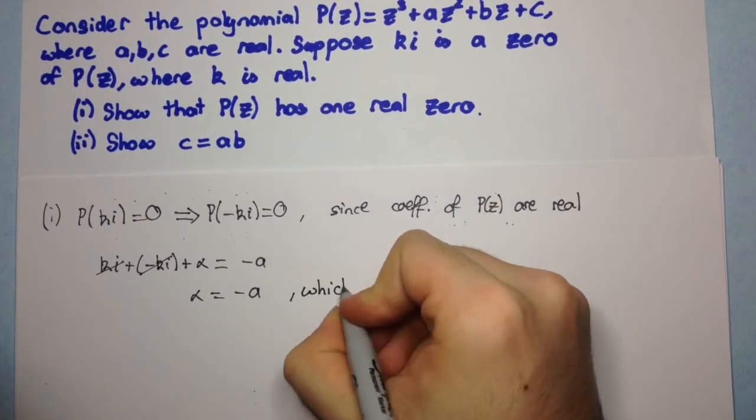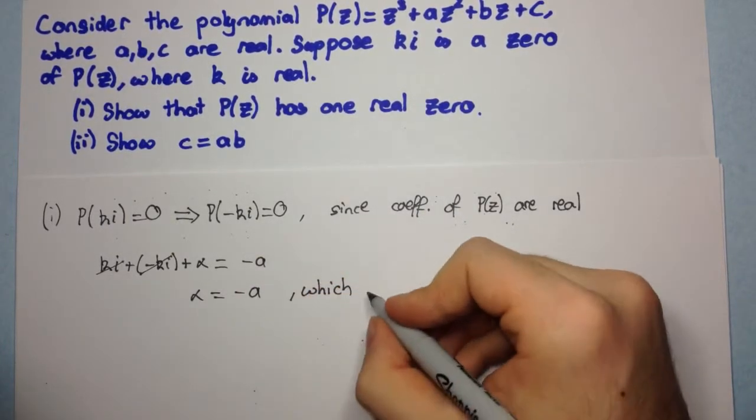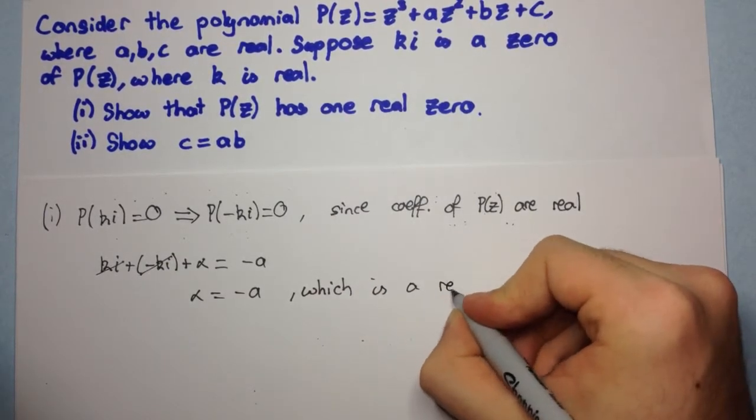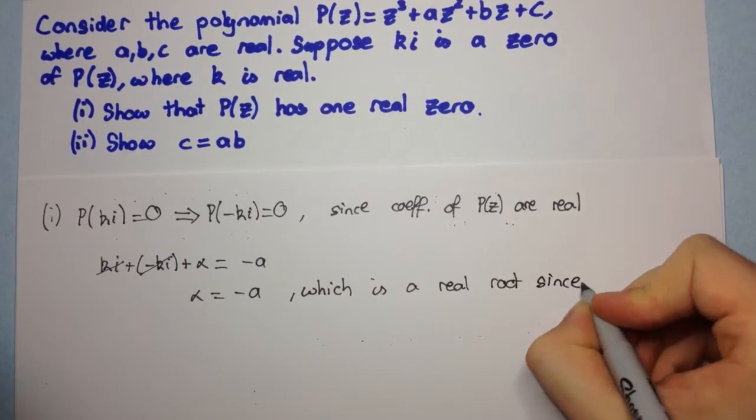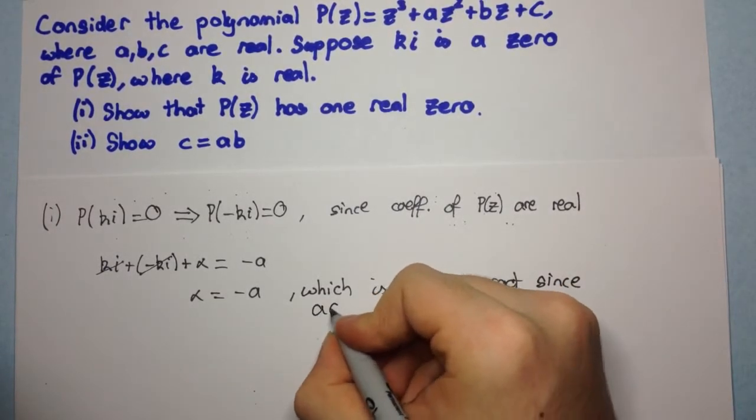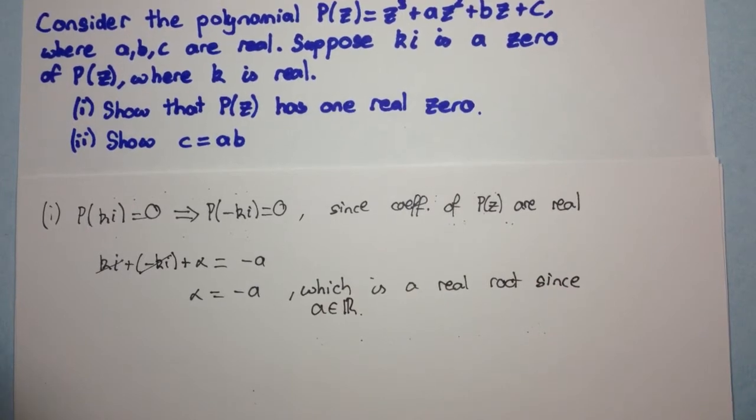Now, these two will cancel, and we simplify to get Alpha equals minus A. Okay, and this is real, since A is real. We're given A is real, which is a real root since A was real.